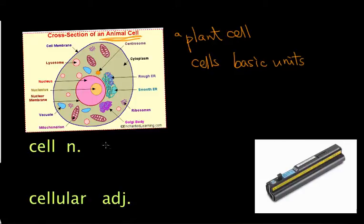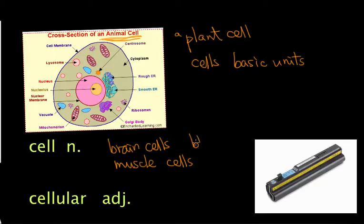In our body, we have so many different kinds of cells. For example, in our brain we have brain cells. In our muscles, we have muscle cells. We have blood cells—for example, red blood cells. In Chinese we say hong xie qiu, but in English we say blood cells. So there are many different kinds of cells in our body.